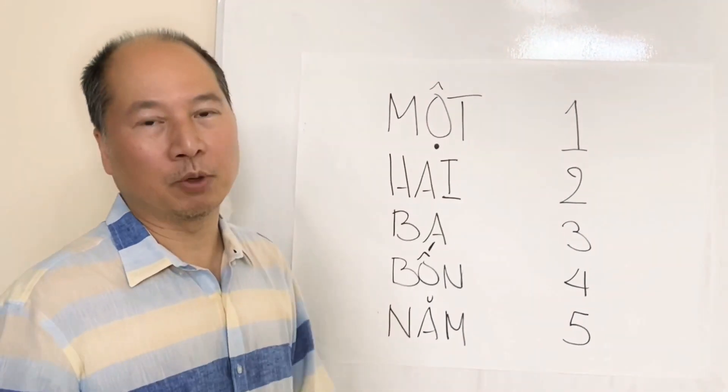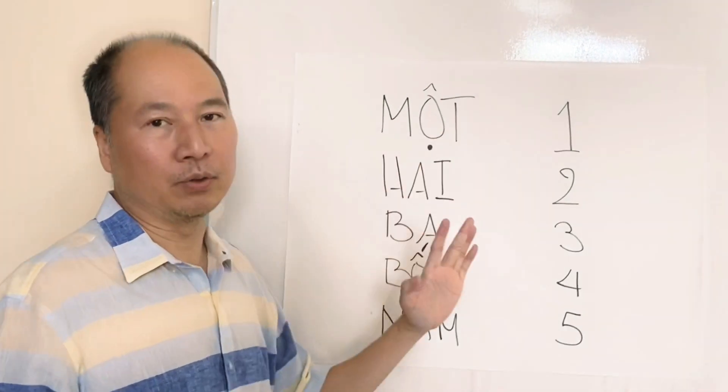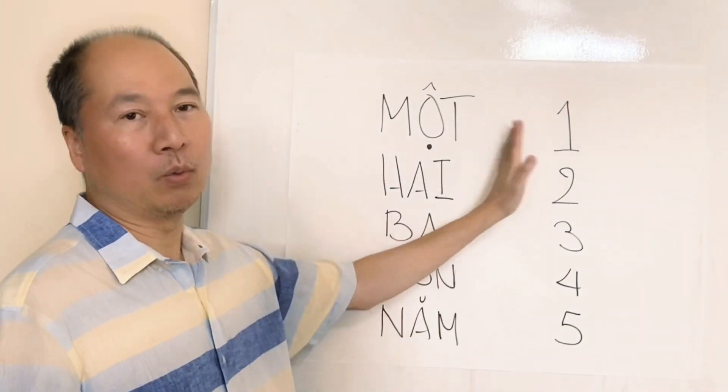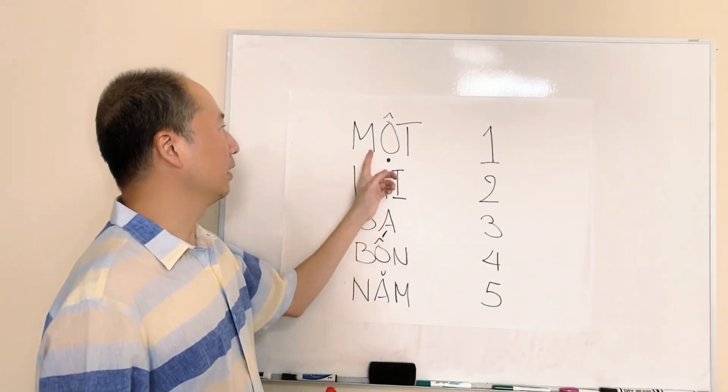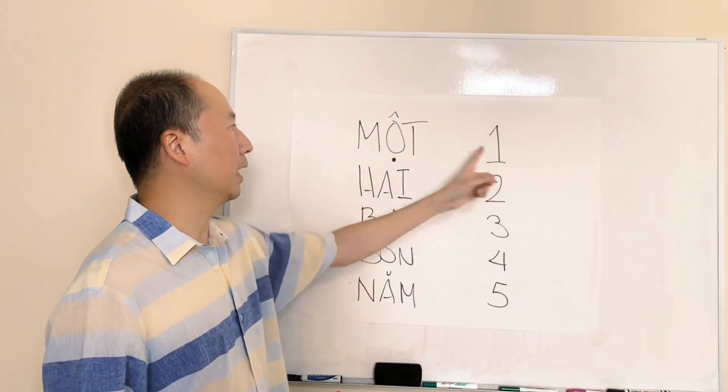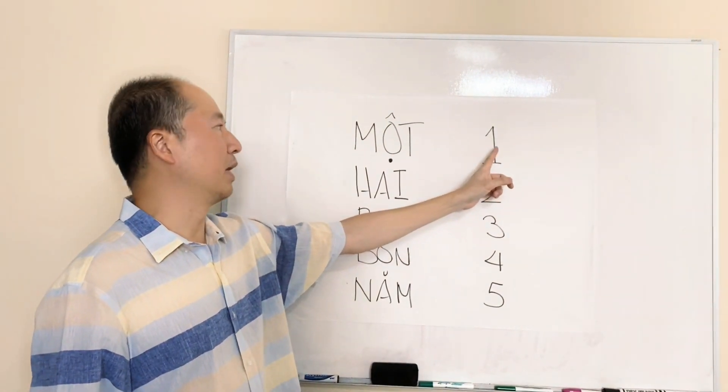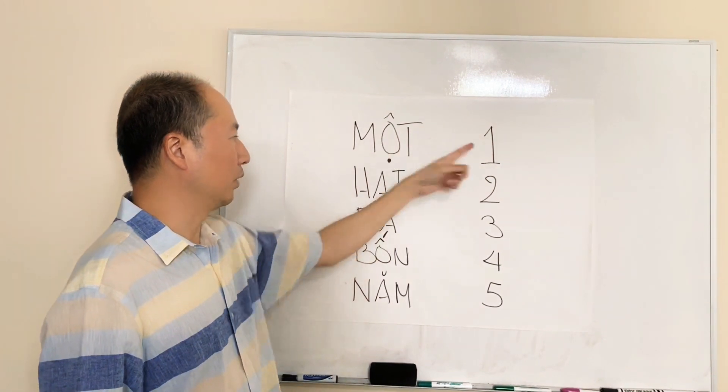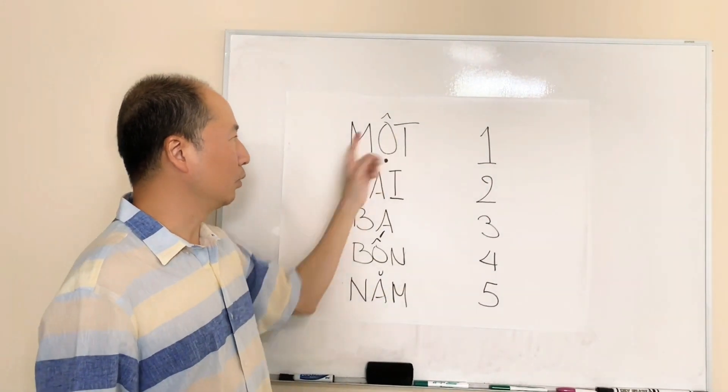So we're gonna do this as a two-part video, which is how to count through one through ten. This is part one, we're gonna do one through five. Here these are the Vietnamese pronunciation and this is the numerical representation. So one through five. So we'll get started here shortly.